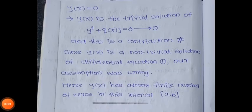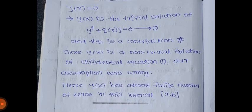By this theorem, y(x) must be identically zero — that is, y(x) is the trivial solution of y'' + q(x)y = 0. This is a contradiction, since y(x) is a non-trivial solution. So our assumption was wrong. Hence y(x) has at most a finite number of zeros in the closed interval [a, b].